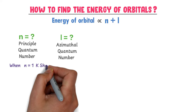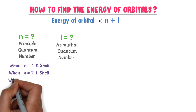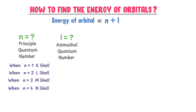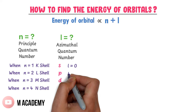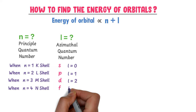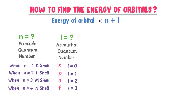When n equals 1, it is the K shell. When n equals 2, it is the L shell. When n equals 3, it is the M shell. And when n equals 4, it is the N shell. Thus, n starts from 1 and goes up to 4. Similarly, there are four sub-orbitals: s, p, d, and f. For s, l equals 0. For p, l equals 1. For d, l equals 2. And for f, l equals 3. Thus, l starts from 0 and goes up to 3.